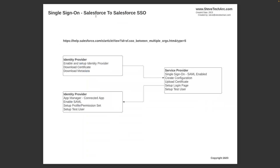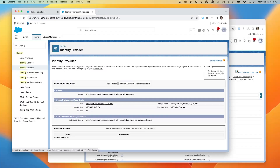Now we're going to begin the process of setting up single sign-on. There's helpful documentation to follow. We'll be enabling and setting up the identity provider org, downloading the certificate and metadata, then going to the SP org to enable single sign-on, create a configuration, upload the certificate, and set up the login page. Then we'll return to the identity provider to set up a connected app, enable SAML, set up the profile and permission set, and configure the test user.